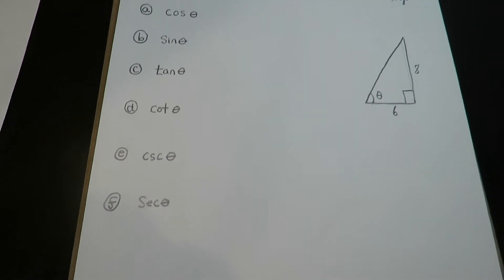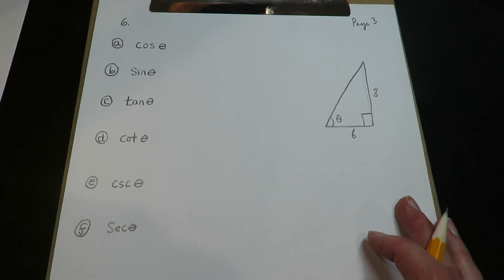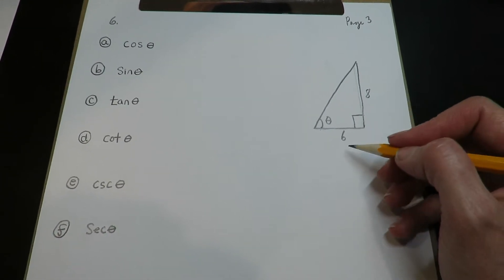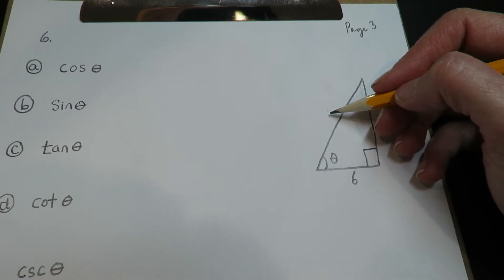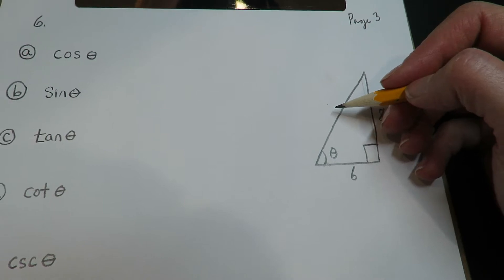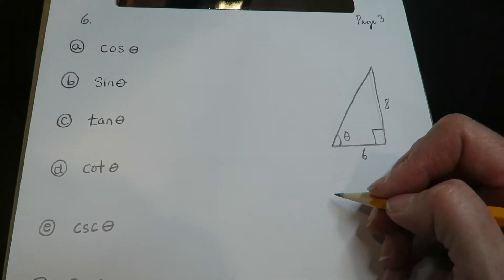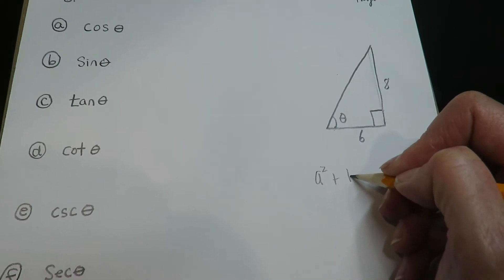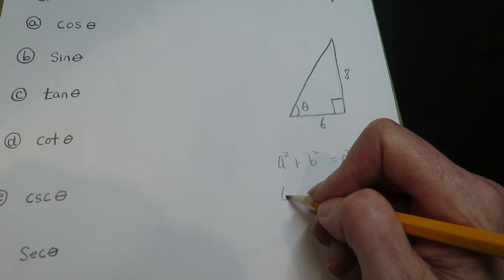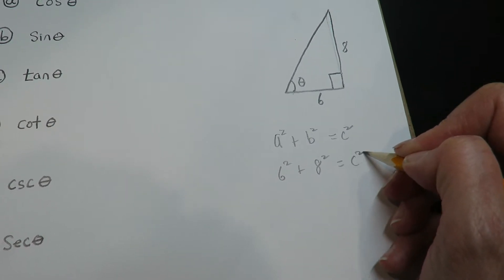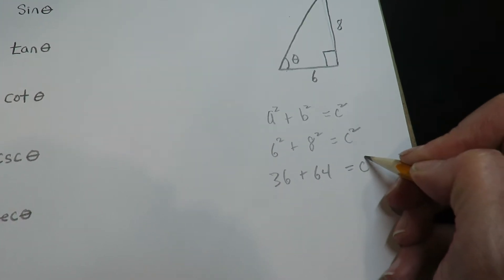Let's rattle this one off — it's very similar to what we just did, so we'll be able to do this one quickly. Here are your two legs of the triangle; you're missing the hypotenuse. The hypotenuse is across from the 90 degrees, so that's the side we're missing. We're going to use the Pythagorean theorem to find it: a squared plus b squared equals c squared. So six squared plus eight squared equals c squared — 36 plus 64 equals c squared, which adds to 100.